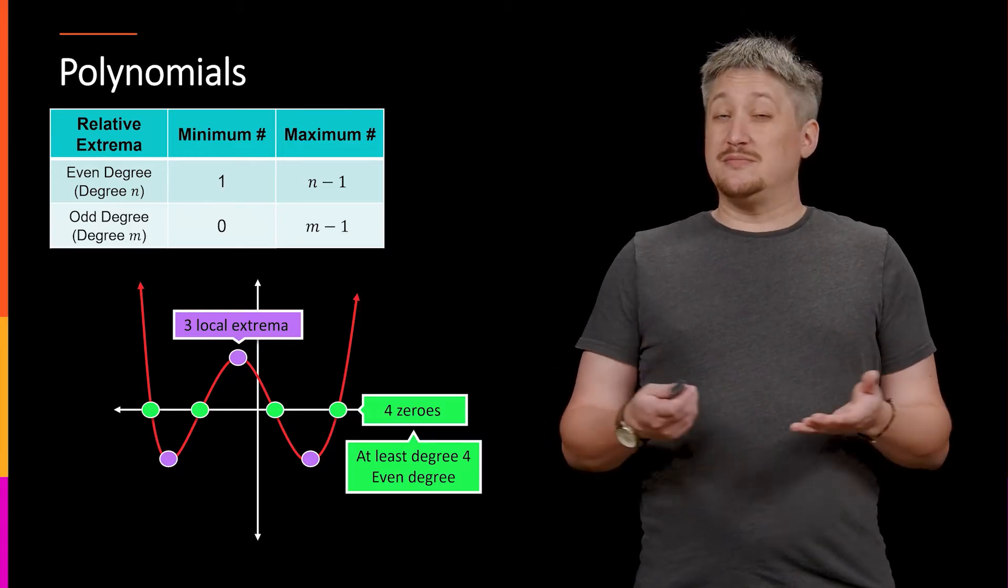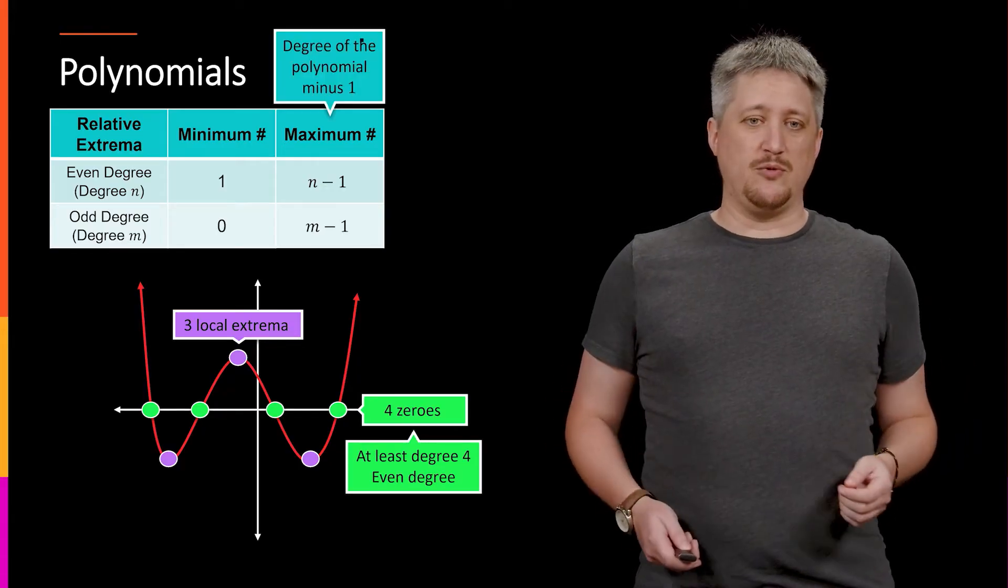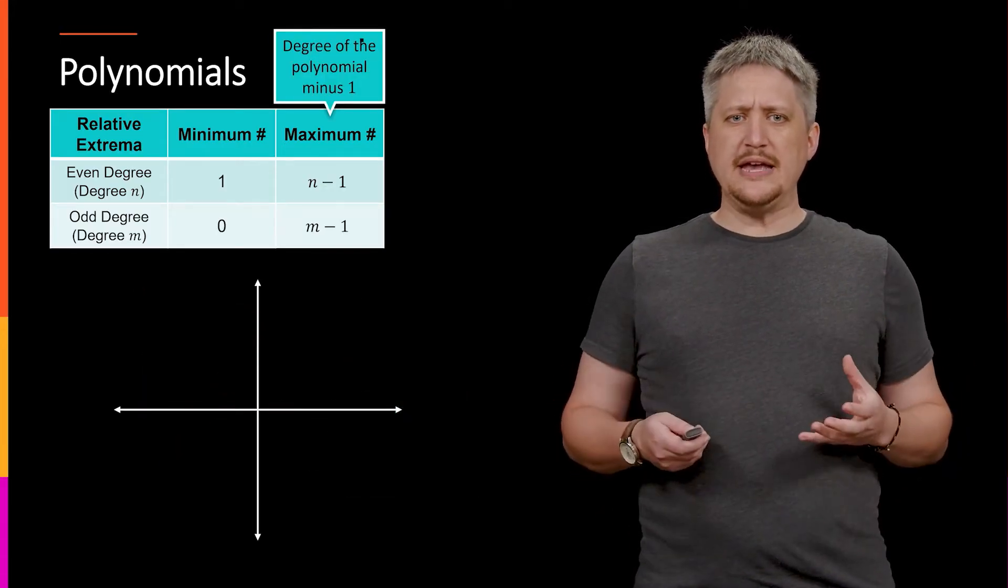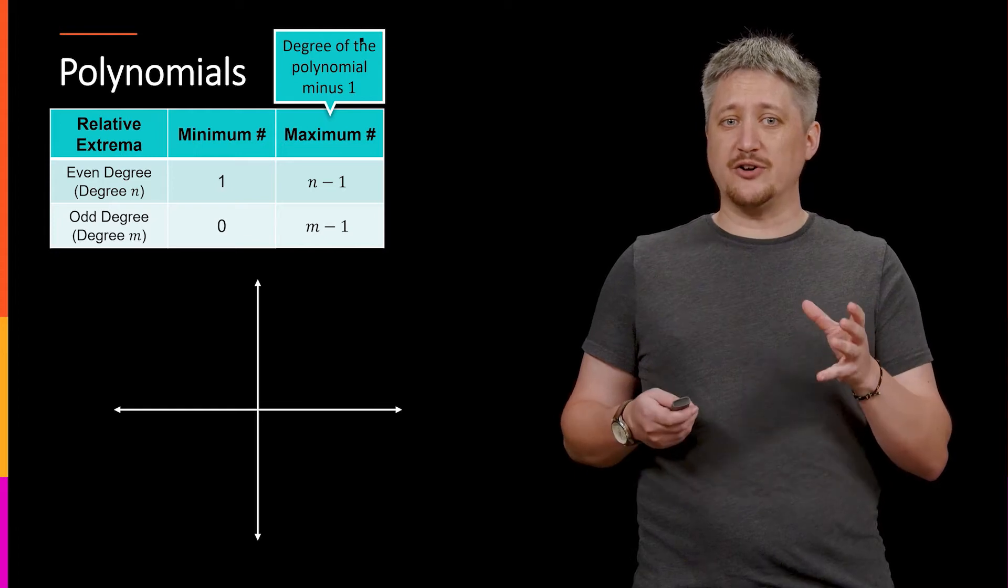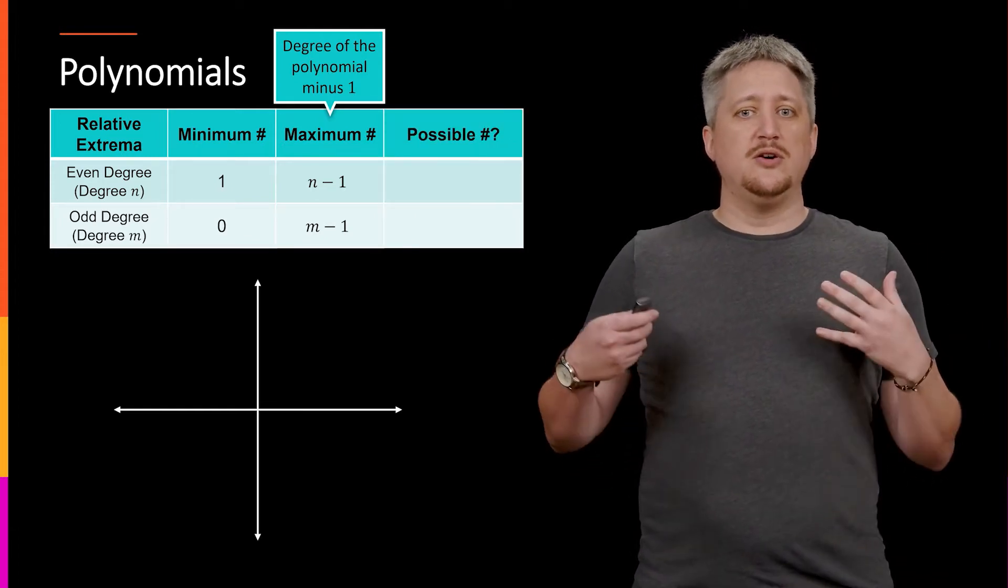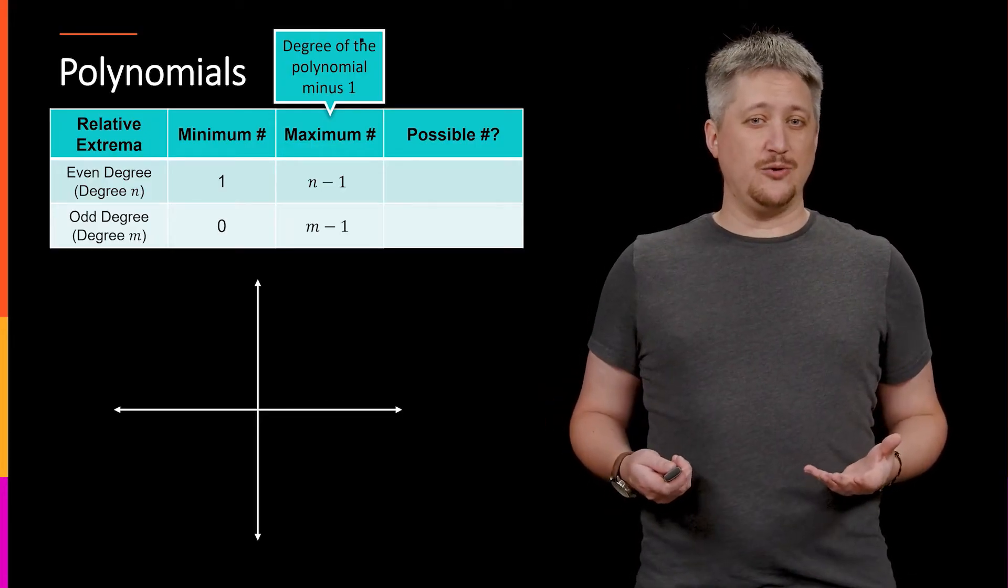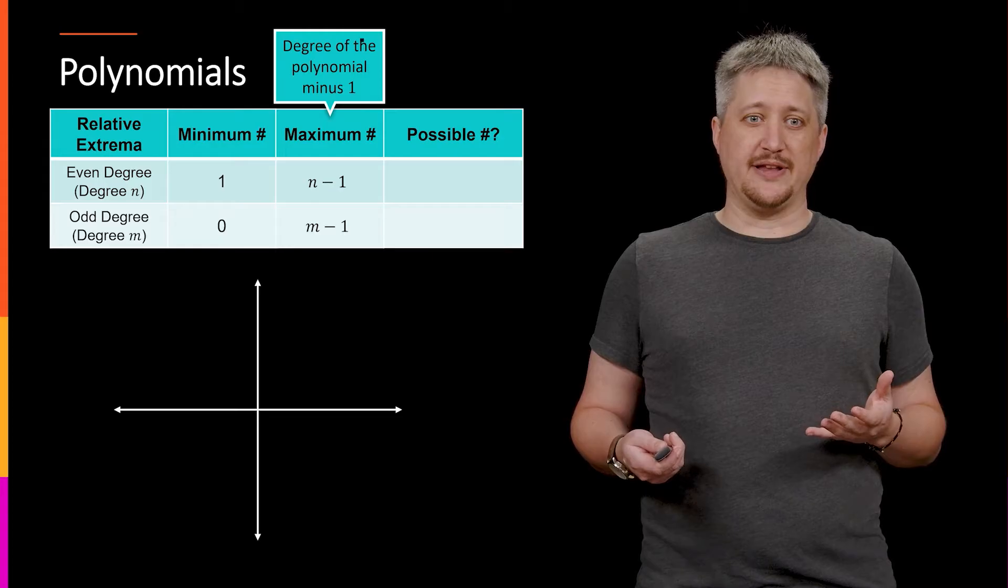All right. So we have bounds, but it turns out we can actually do a little bit better by thinking through what's happening just a little bit more. So if we have the degree minus one as our upper bound and we have some minimum as the lower bound, what about actual possible values?